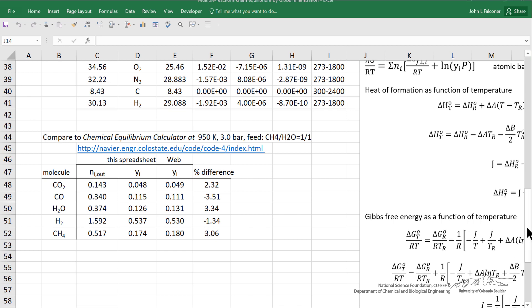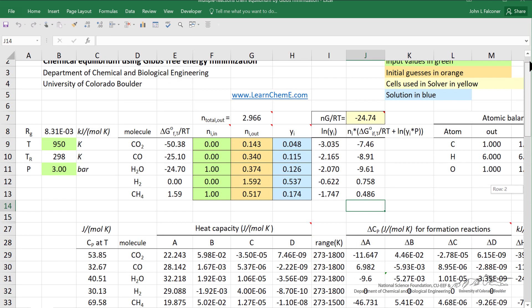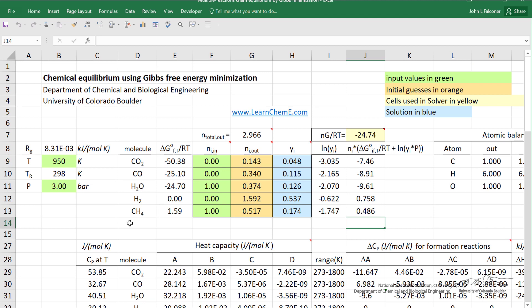So the big advantage of the spreadsheet where we're doing Gibbs energy minimization instead of using extensive reactions, we can now add another component, say methanol, use the same approach, add in heat capacity values and heats of formation at 298, heats of reaction at 298 to calculate the change in Gibbs free energy at standard conditions. Then make guesses for the initial number of moles of methanol and calculate the mole fraction, and include now in this minimization the value for Gibbs free energy, partial molar Gibbs free energy for methanol.